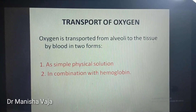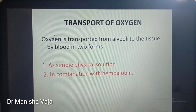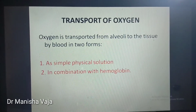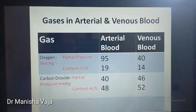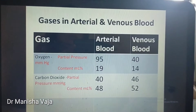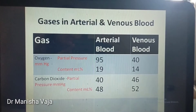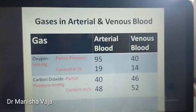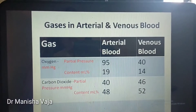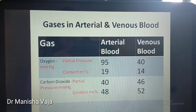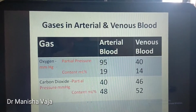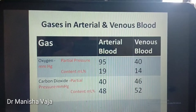Oxygen is transported from alveoli to the tissue by blood in two forms: first as simple physical solution, and second in combination with hemoglobin. Looking at the table of gases in arterial and venous blood: the partial pressure of oxygen in arterial blood is 95 mmHg and in venous blood is 40 mmHg.